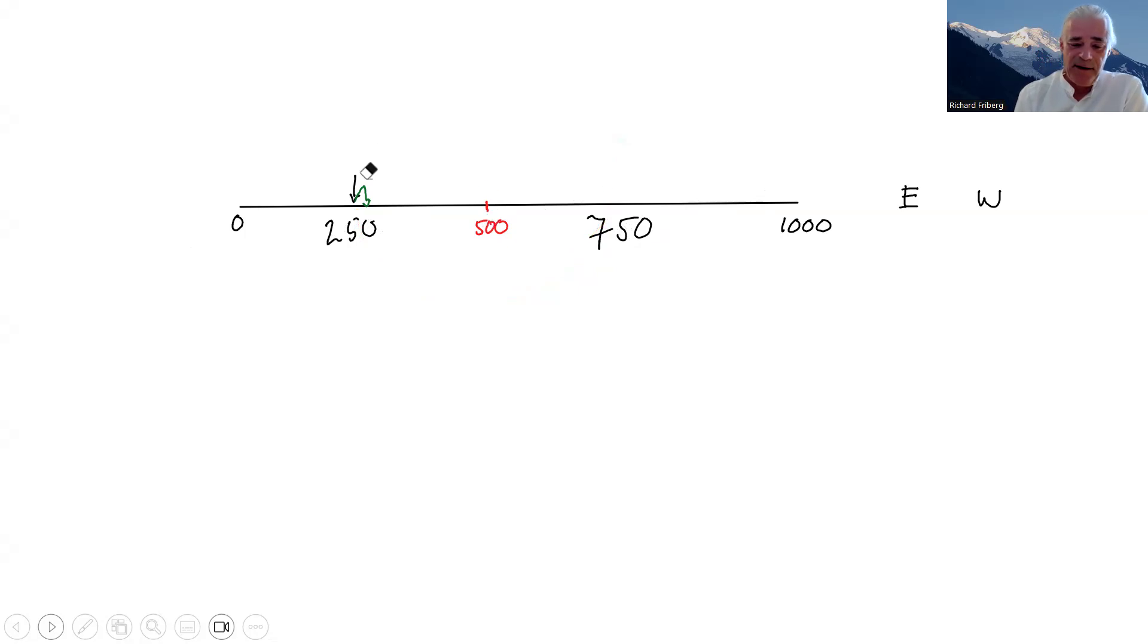So that would be a Nash equilibrium. So let's just highlight that. So we have Easty and Westy locating right in the middle. At the middle is a Nash equilibrium. None of them has an incentive to unilaterally deviate. So they each have the market by locating here. If they were to move, they would just be getting fewer customers.